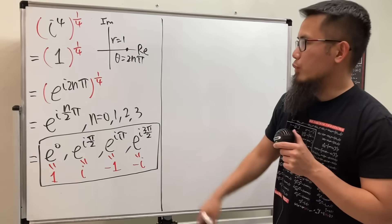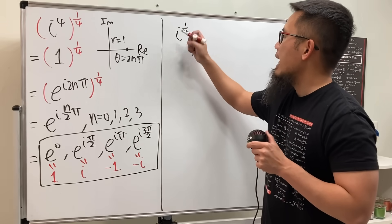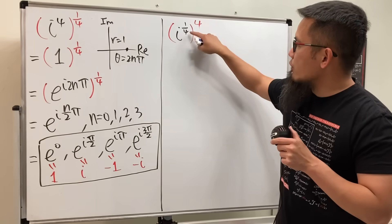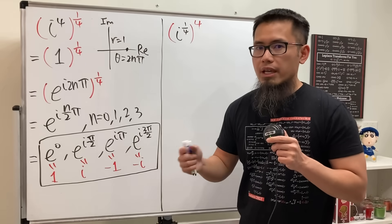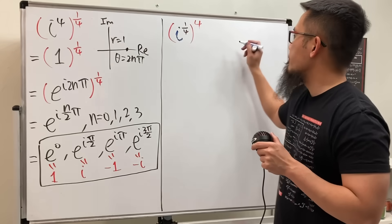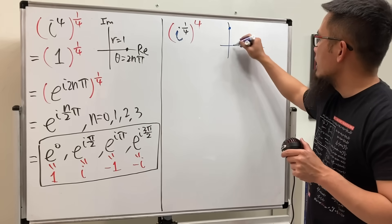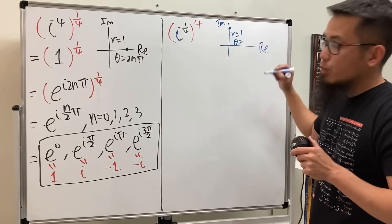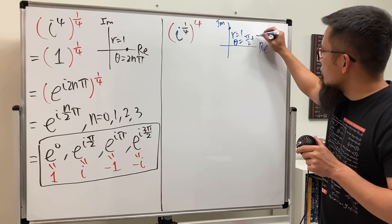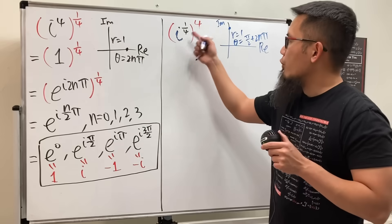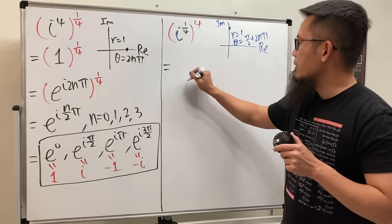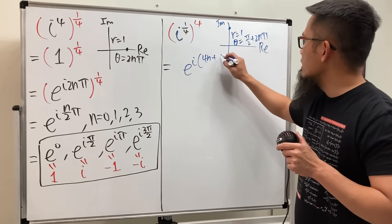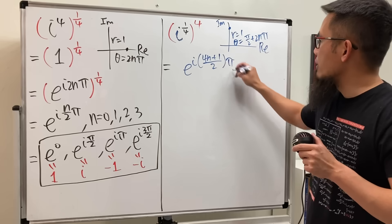Now let's check out what happens if we start off by looking at I to the 1 over 4th first, and then raise to the 4th power. Because we have the 1 over 4th for I, we are going to take I and put that into polar form first, and then there will be 4 answers. I is right here on the complex plane — r is equal to 1 and the angle theta is pi over 2. Don't forget to add 2 pi, so for I we get e to the i times (4n + 1) over 2 times pi.